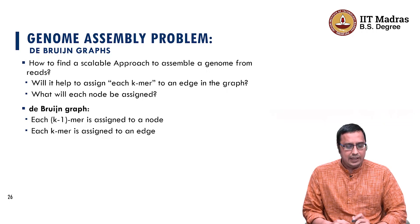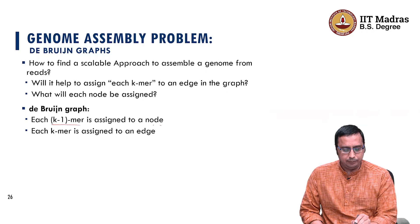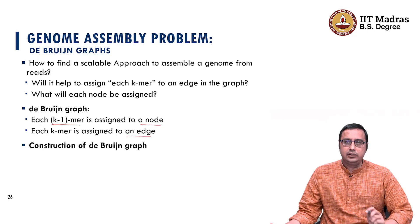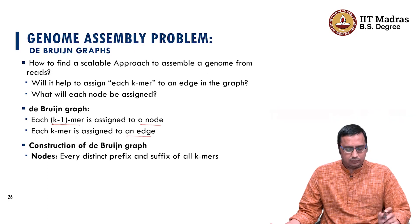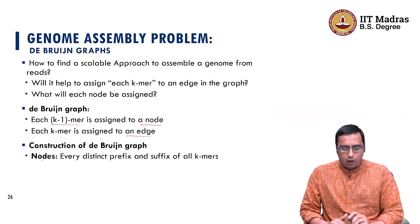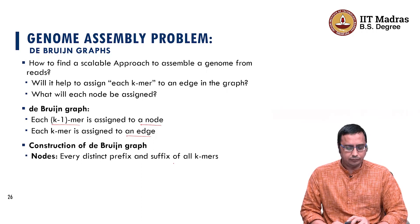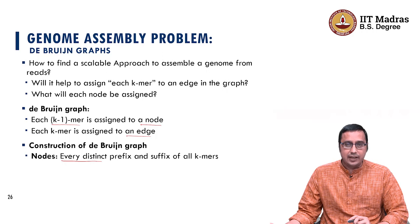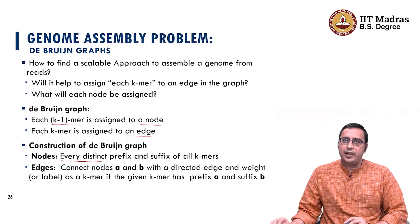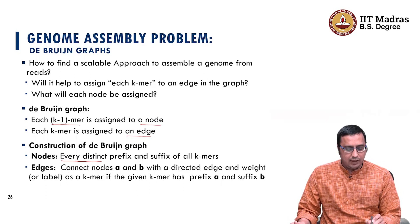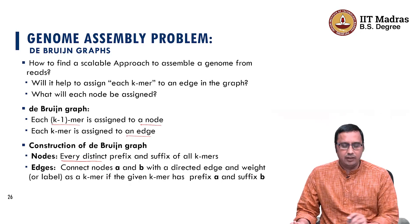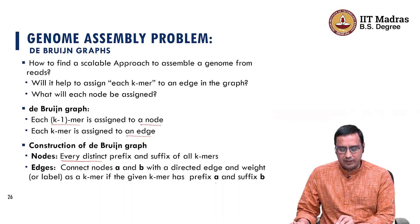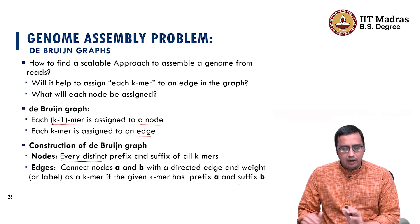That is where the De Bruijn graph comes to our help. Here, we can assign each K-mer to a node and each K-mer assigned to an edge as a weight or label. To construct a De Bruijn graph, we take all prefixes and suffixes of all K-mers and find the distinct prefixes and suffixes to construct our node set. To construct an edge, we connect two nodes A and B with a directed edge labeled with a K-mer if the prefix of that K-mer is given by A and the suffix is given by B.